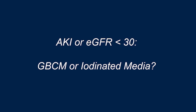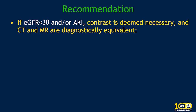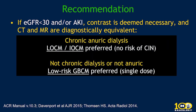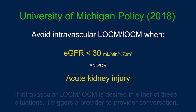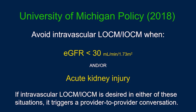If you have a patient with AKI or eGFR less than 30, should you give a gadolinium contrast agent or do a contrast-enhanced CT? My recommendation: if eGFR is less than 30 or the patient has AKI and contrast is deemed necessary and CT and MR are considered diagnostically equivalent — if the patient has chronic anuric dialysis, do a contrast-enhanced CT because there's no risk of CIN. If not on chronic dialysis, use a Group 2 agent single dose with a contrast-enhanced MR, as the risk of NSF is extremely low. We avoid intravascular iodinated contrast when eGFR is less than 30 or AKI is present; if contrast is truly needed, we pick up the phone and have a conversation about risks and benefits. It's not a hard line in the sand.